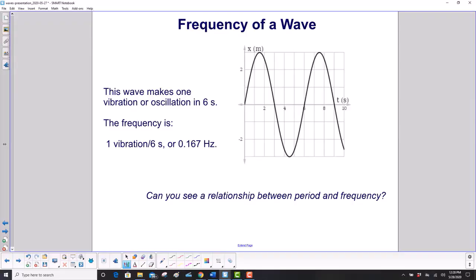This wavelength makes one vibration or oscillation in six seconds. So here, it goes up, down, then comes back to the starting point. That's six seconds. How many vibrations did it make there? We count that as one vibration. It starts here, and when it comes back to the point where it's going in the same direction and it's at the same equilibrium point, that's our wavelength—that is one vibration.